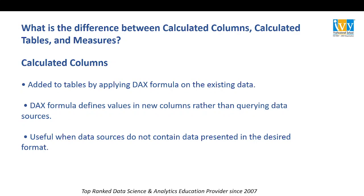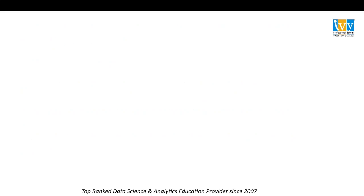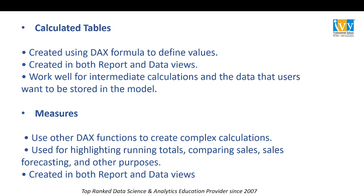What is the difference between calculated column, calculated table, and measures? A calculated column can be added to tables by applying a DAX formula on existing data. DAX formulas define values in new columns rather than querying data sources, and this is useful when data sources do not contain data in the desired format. Calculated tables are also created using DAX formulas and can be used in both report view and data view. Measures use DAX functions to create complex calculations, are created in both data view and report view, and are used for running totals, cumulative totals, sales forecasting, and other purposes.